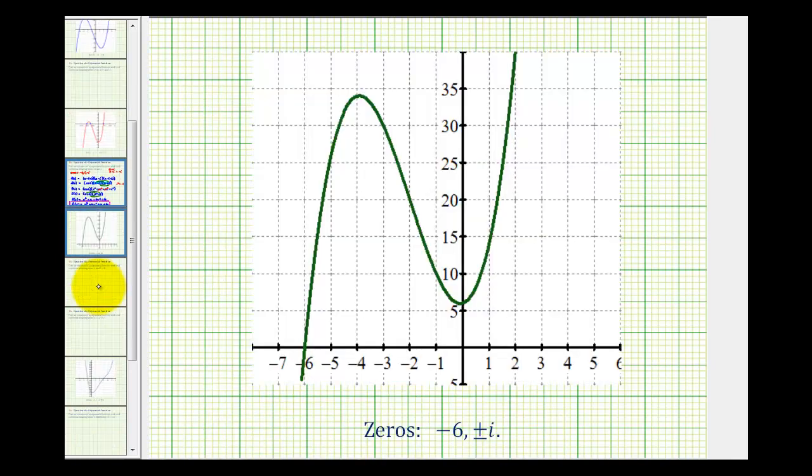So here's the graph of our function. Notice how we do have an x-intercept of negative six. And even though we have two other zeros, because they're imaginary, we do not have any other x-intercepts.